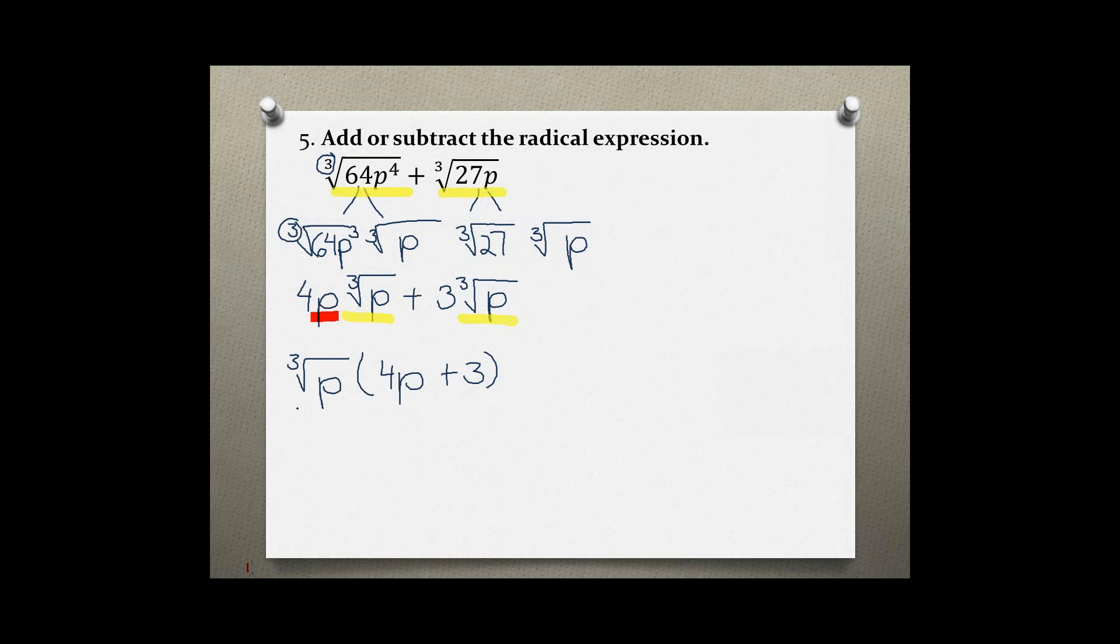We can also write the cube root of p at the end, because this is multiplication and multiplication is commutative, so you are allowed to switch these two parts. I believe in the book the correct answer is the 4p plus 3 first, and then the cube root of p.